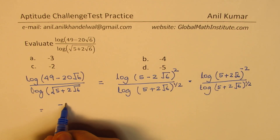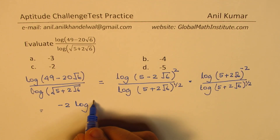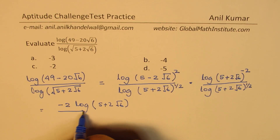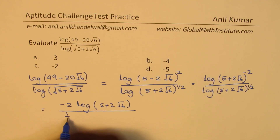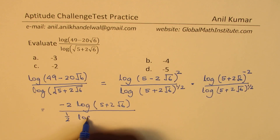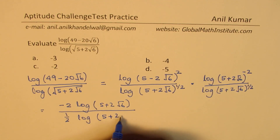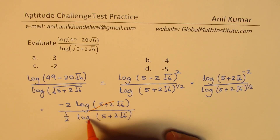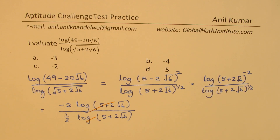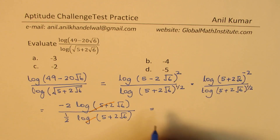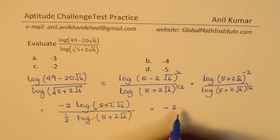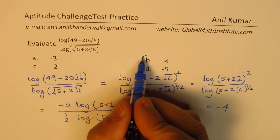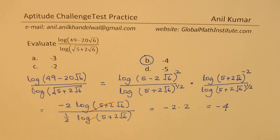We could now write the numerator as minus 2 times log of (5 plus 2 square root 6), and the denominator as one half times log of (5 plus 2 square root 6). You can cancel the logarithmic part, and what you get is the numbers to evaluate: minus 2 divided by one half, which is definitely equal to minus 4. So minus 4 is the right answer for the given question.